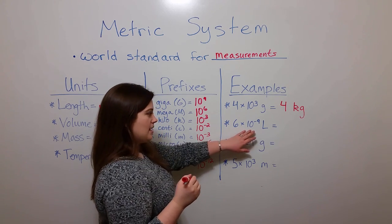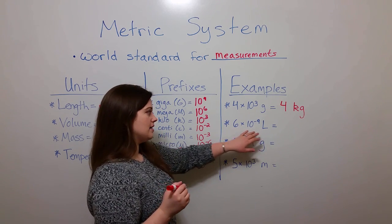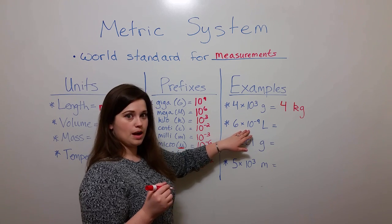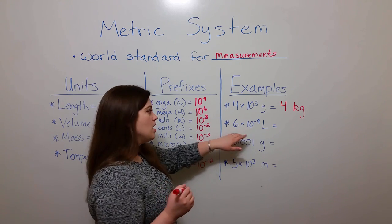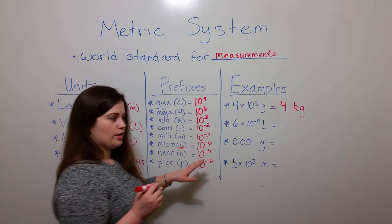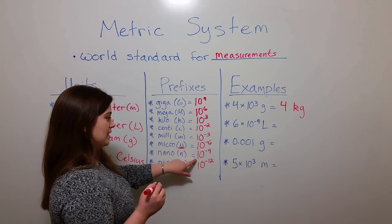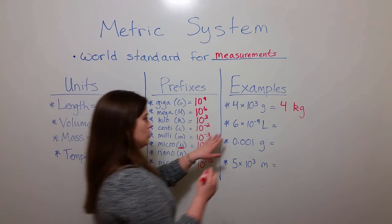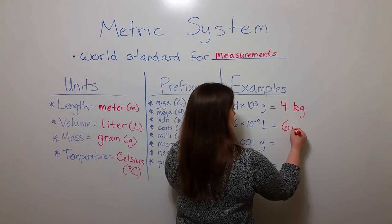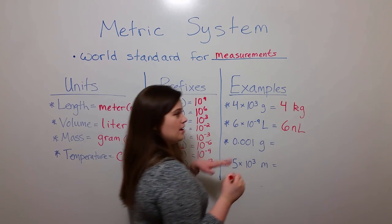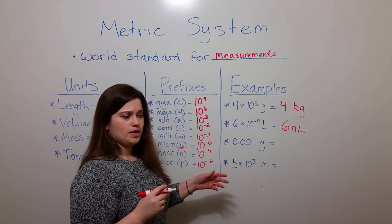Six times ten to the minus ninth liters. Instead of writing out this very small number in standard notation, you can use the prefix for ten to the minus ninth, which is nano. So this would be six nanoliters, which is obviously a very small unit of volume.